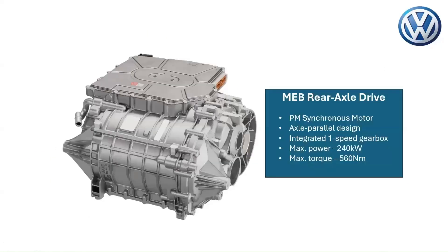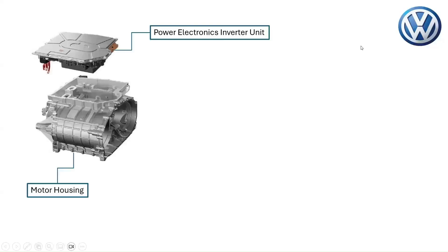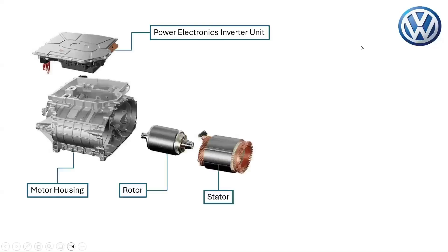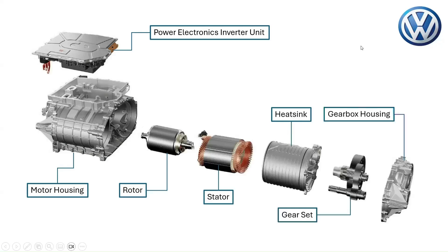Taking a deep dive into the MEB rear axle drive unit of the Volkswagen ID Buzz, the main components of the rear axle drive unit are the power electronics inverter unit, motor housing, the rotor and the stator of the permanent magnet synchronous motor, the heat sink of the motor, and the integrated one-speed gearbox system. The gear set and gearbox housing are highlighted.